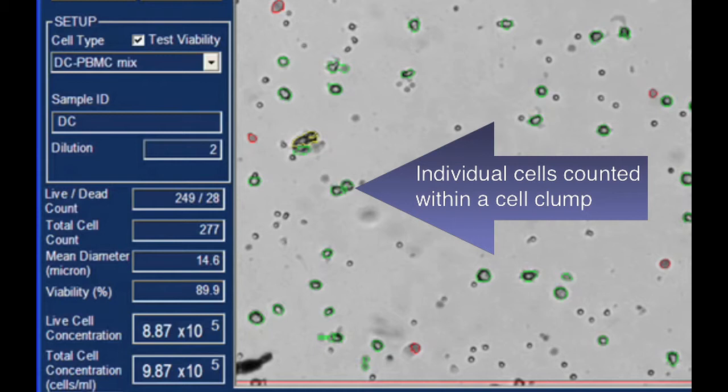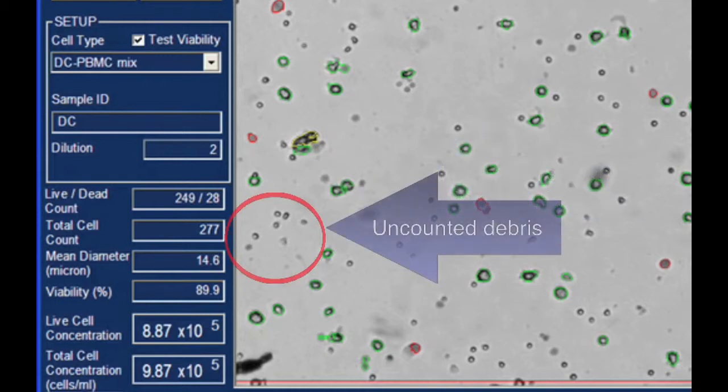Counted images can be used to clearly indicate uncounted cellular debris and proper counting of irregular shaped cells.